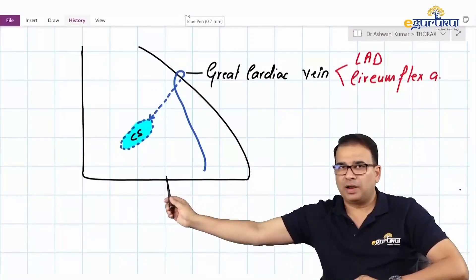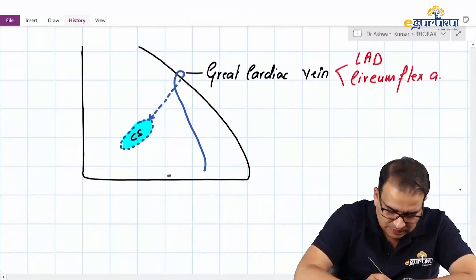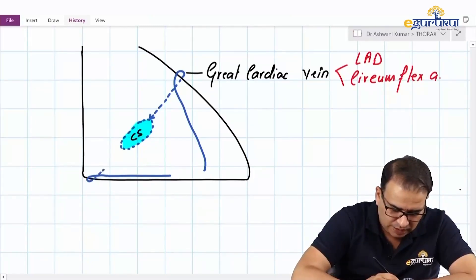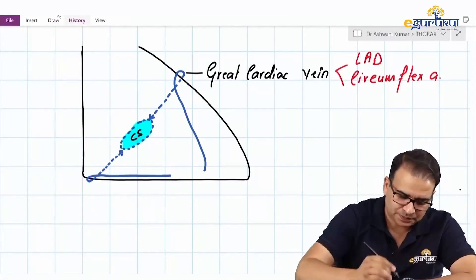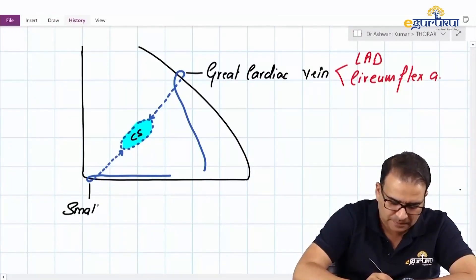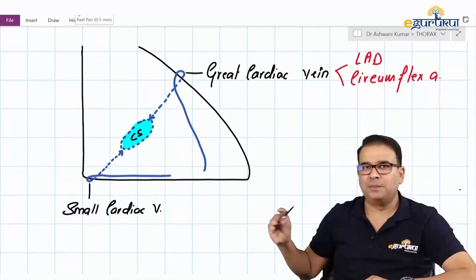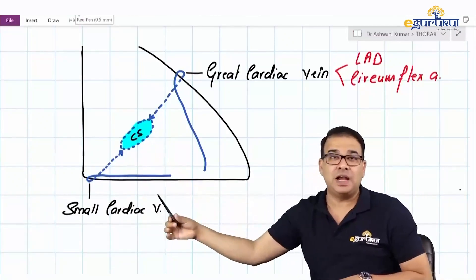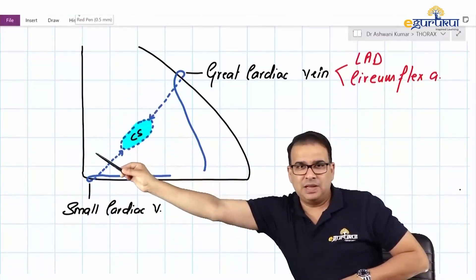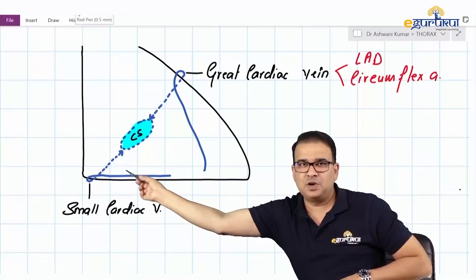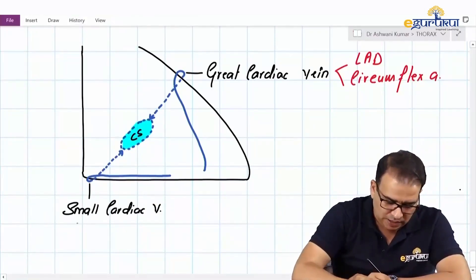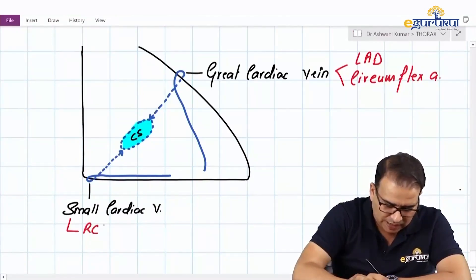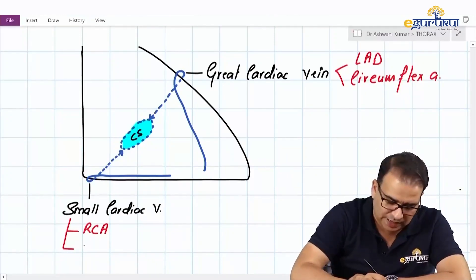Then we have a vein running along the inferior margin. It turns on the inferior border and drains into the right end of the coronary sinus — this is the small cardiac vein. The small cardiac vein is accompanied by the right marginal artery along the inferior border, and then by the main trunk of the right coronary artery on the posterior side.